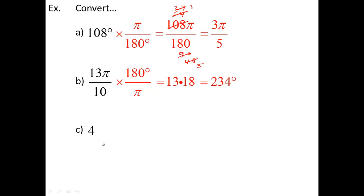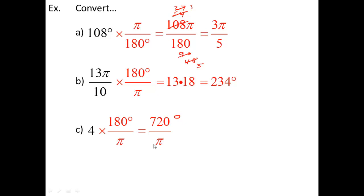The last one: just 4 — not 4π, just 4. Since there's no unit given, it's a radian. Multiply by 180/π: 18 times 4 is 72, so 720/π. This is now a degree answer. Feel free to convert to decimal: you should get approximately 229.183 degrees.